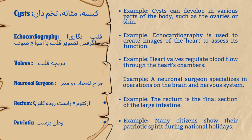Cysts. Example: cysts can develop in various parts of the body, such as the ovaries or skin. Echocardiography. Example: echocardiography is used to create images of the heart to assess its function.